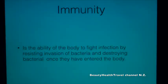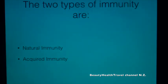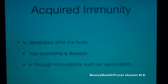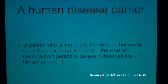Immunity is the ability of the body to fight infection by resisting invasion of bacteria and destroying bacteria once they have entered the body. The two types of immunity are natural immunity and acquired immunity. Natural immunity is a natural resistance to disease that is partially inherited or partially developed through hygienic living. Acquired immunity is developed after the body has overcome a disease or through inoculations such as vaccination. A human disease carrier is a person who is immune to the disease but carries the germs, transferring the virus or bacteria from person to person without getting sick themselves.